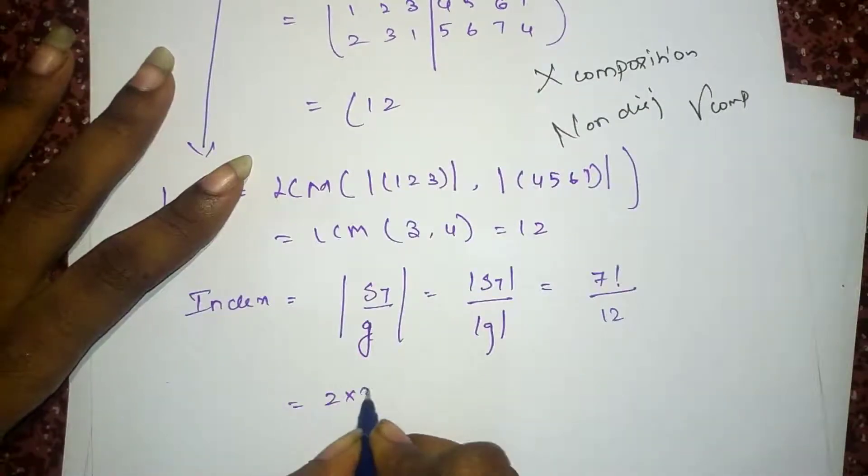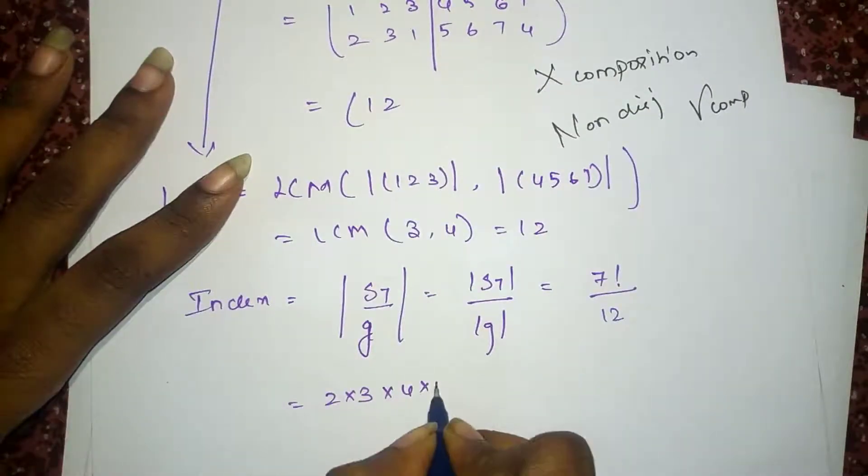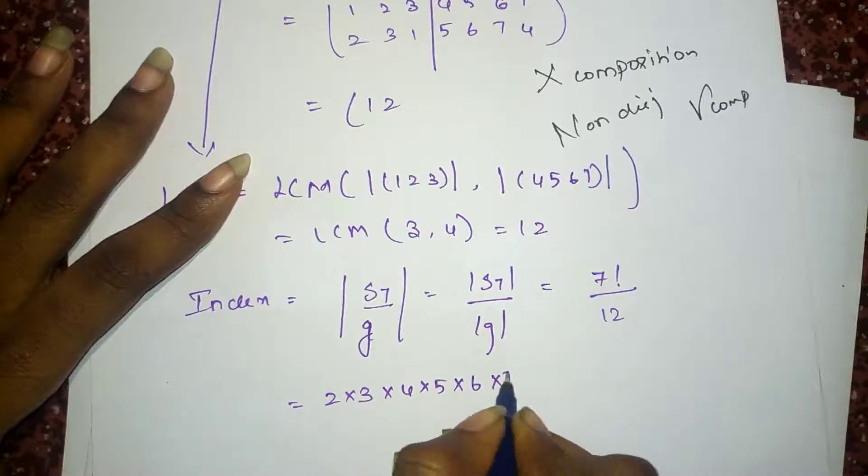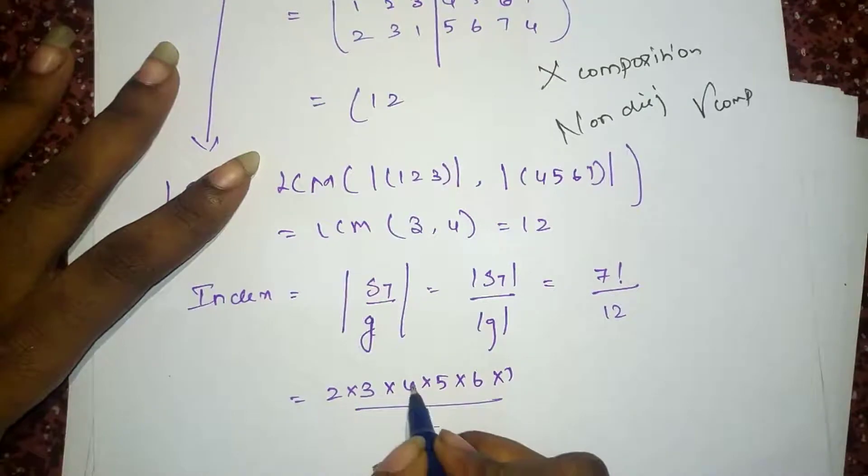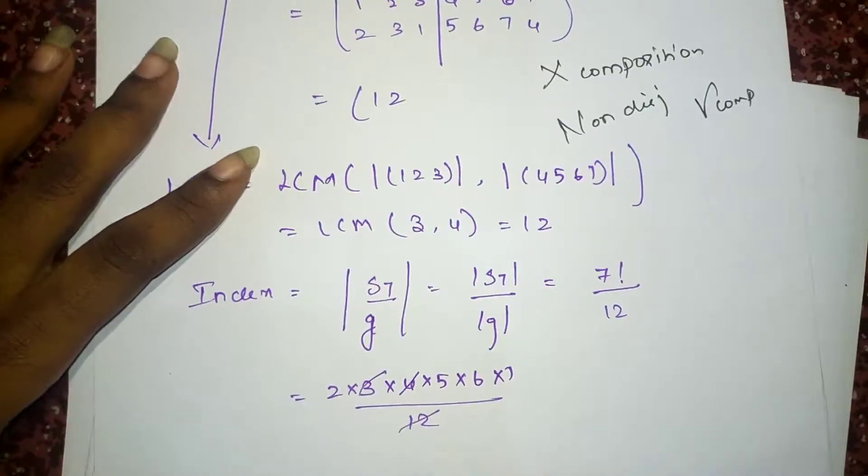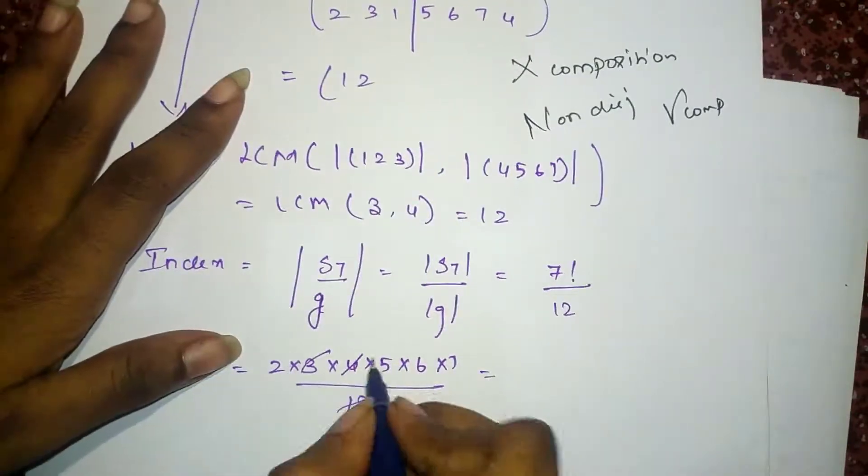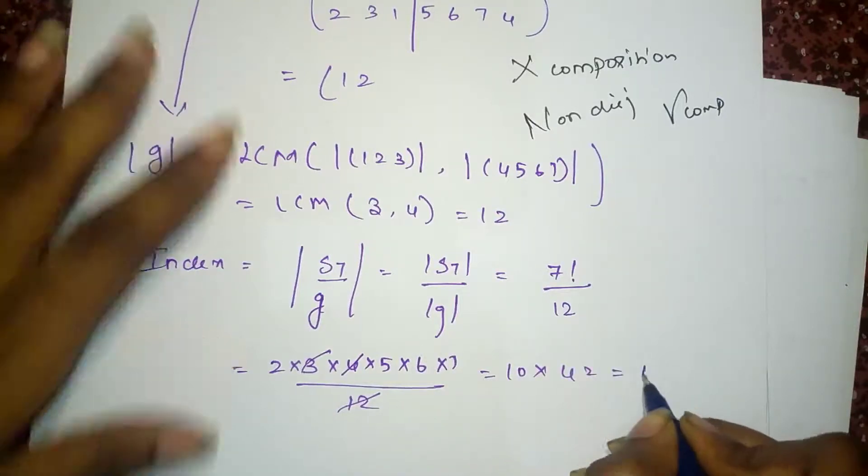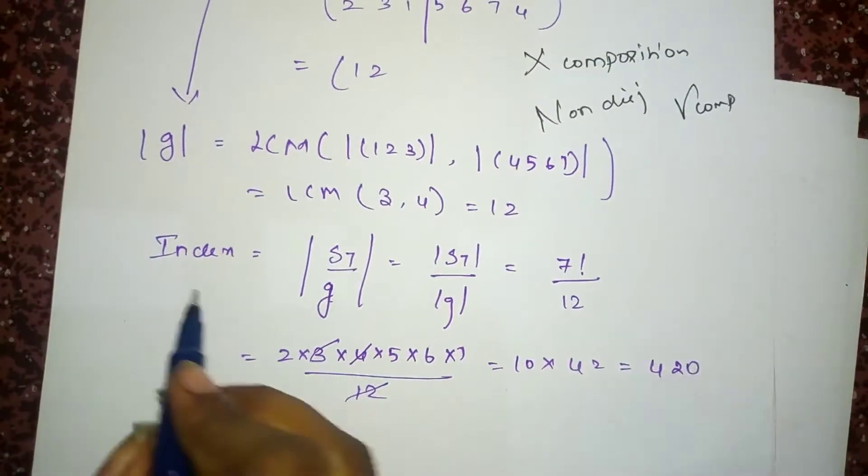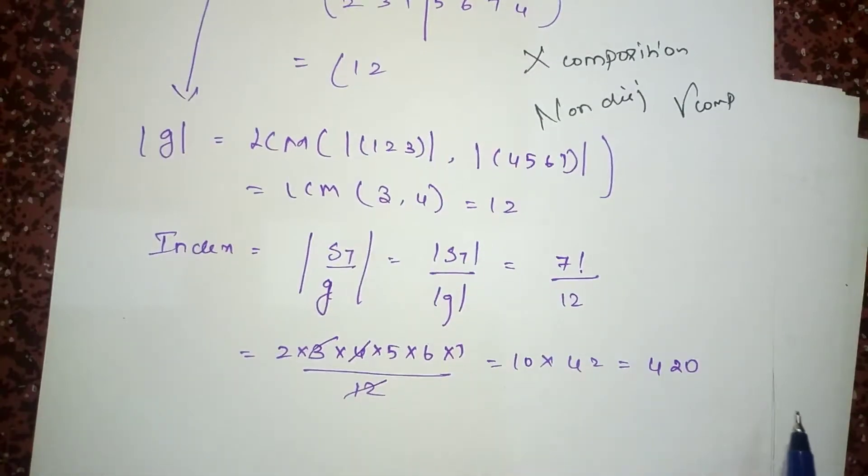7 factorial by order of g is 12. It is 2, 3, 4, 5, 6, 7 by 12. It is 3 into 4, right? So, I am going to cancel this 3 and 4. So, 5 twos are 10 into 6 sevens are 42. It is 420. Index is 420.